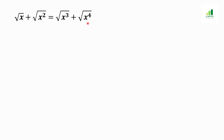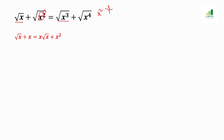First, we convert this complicated equation into a simplified form. Under root x stays the same. The under root x squared converts to x, because the root cancels with the square. The x cubed converts to x times under root x, because x cubed equals x squared times x. And x to the fourth converts to x squared, since 2x squared comes out from the root.